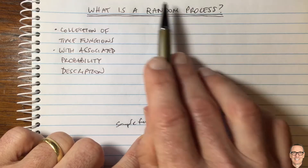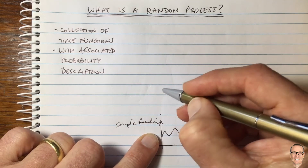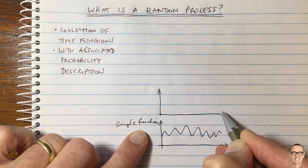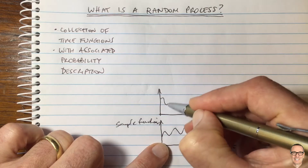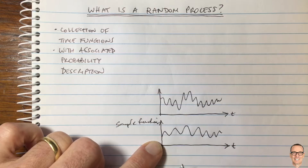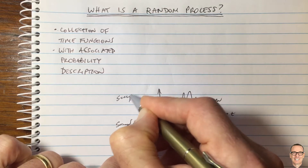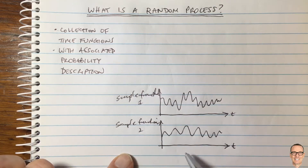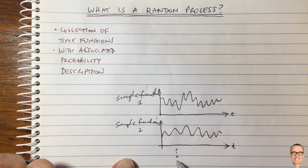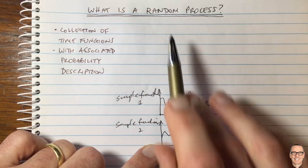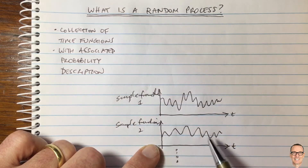What does that really mean? That's what we're getting to when we talk about a random process. Let's consider another sample function — another possible one from a second telephone call, for example. Maybe the phone call on this occasion causes the amplitude to go up and down in a different way. So this is sample function one, this is sample function two, and for every telephone call we make we'll get lots of sample functions. Our random process looks at these sample functions and tries to characterize them in terms of random variables.